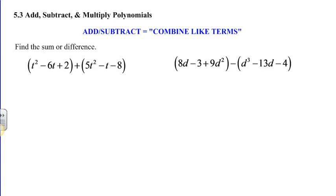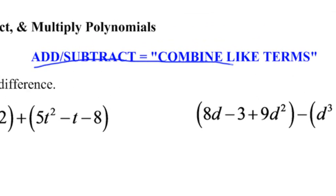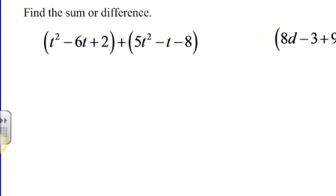So the first thing we're going to do is add polynomials. Whenever we add or subtract polynomials, the key is to combine like terms, just like I have right here in big, bold, blue letters. Don't make it any more complex than it really is. When we look at this, we see t squared minus 6t plus 2 plus 5t squared minus t minus 8. Because it's all addition, we can drop those parentheses and combine like terms. There's a t squared there, there's a 5t squared there, t squared plus 5t squared is 6t squared. Negative 6t, negative t, I add those together and I get negative 7t. And then 2 plus negative 8 is negative 6.